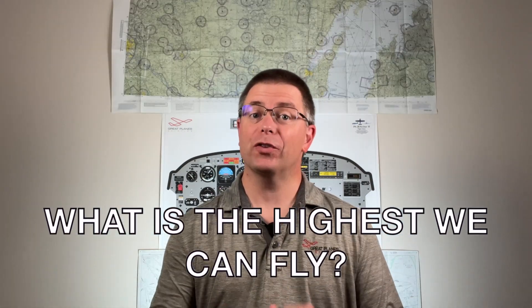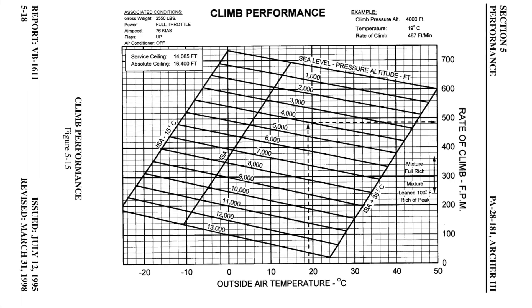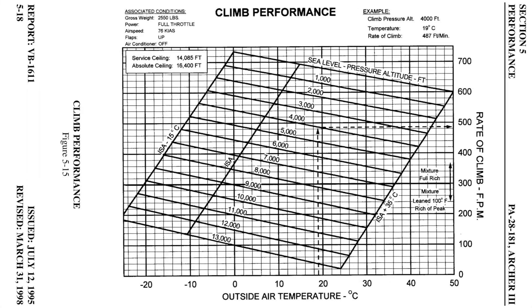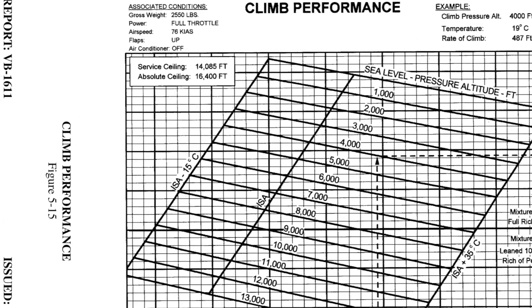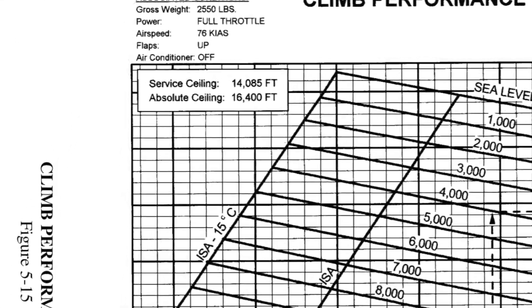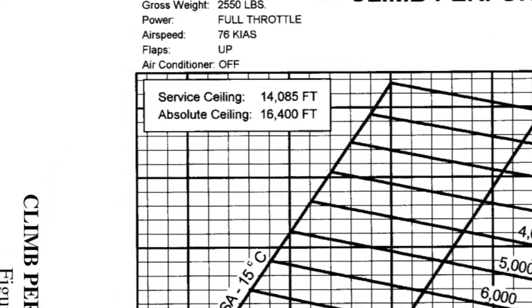Question 2: What's the highest we can fly? There are several factors to consider here. First is the service ceiling of the aircraft. By definition, the service ceiling is the altitude at which the aircraft can no longer climb 100 feet per minute. While climbing higher is possible, it isn't practical. The Archer service ceiling is found on the climb performance chart in the POH, and in our case it's 14,085 feet.